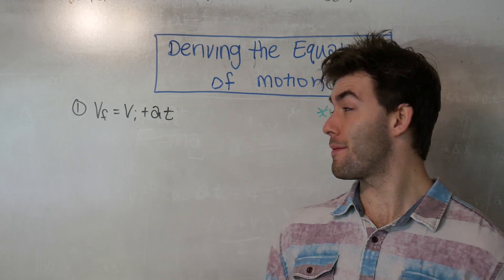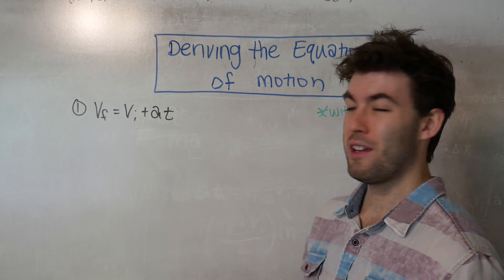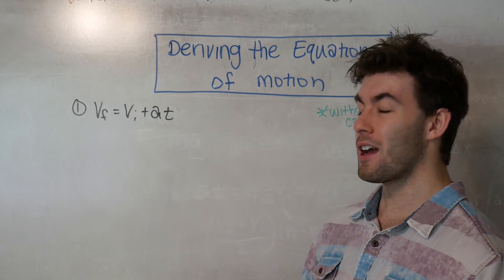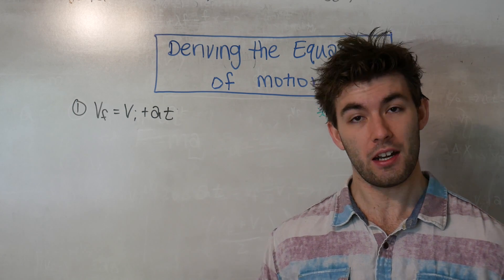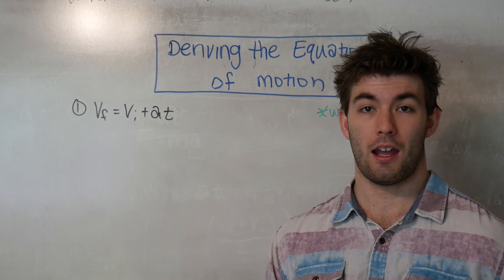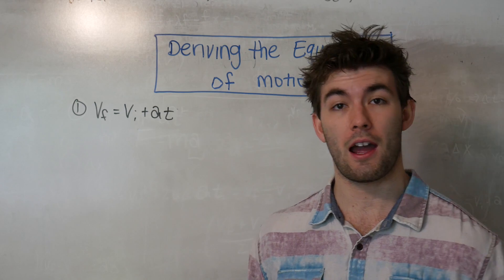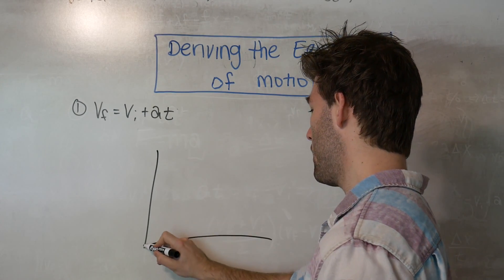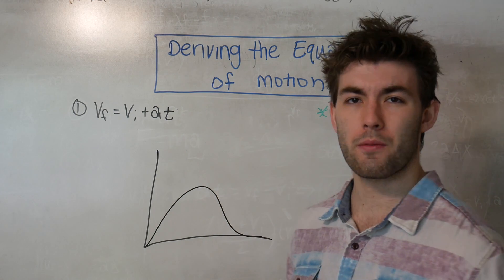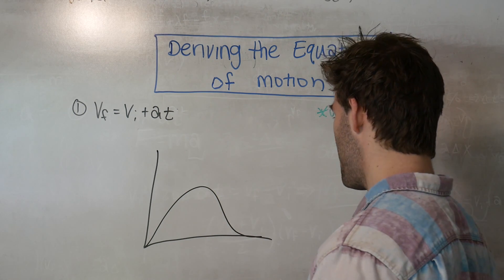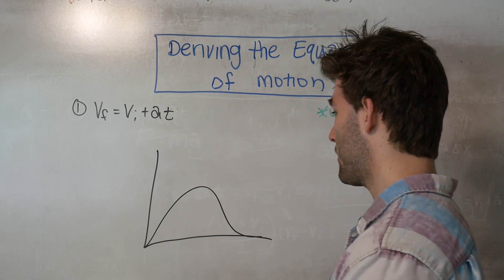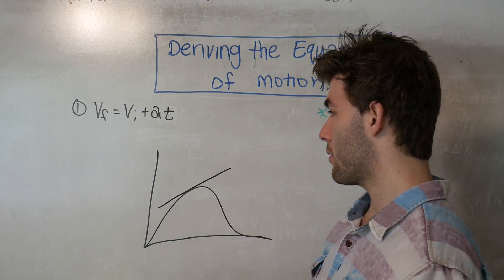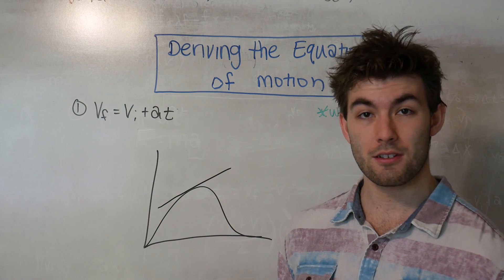Now in order to derive the second equation of motion, we have to recall the definition of averages. Because this isn't calculus, we're not talking about instantaneous positions or velocities at some point in space. We're going to be talking about averages. And what I mean by that is if we were to make a graph of either position over time or velocity over time,